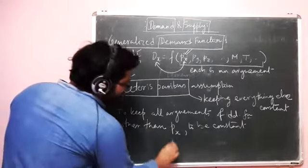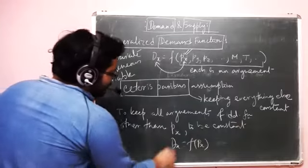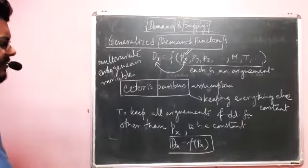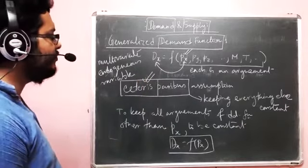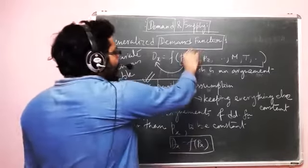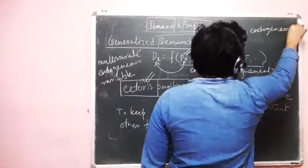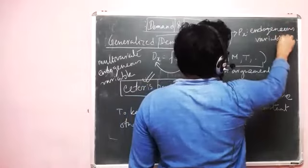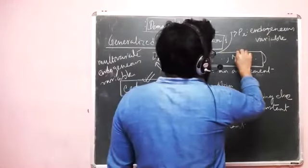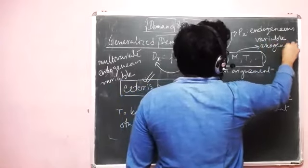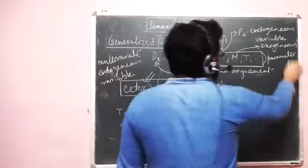By making all other arguments constant, we simplify the demand function. This creates two partitions: Px is the endogenous variable, and all other variables — other prices, income, etc. — are called exogenous or parameters. We generally write the function as D = f(Px), because the exogenous values are given from outside and do not determine demand through the function.